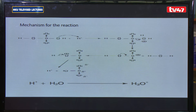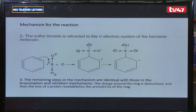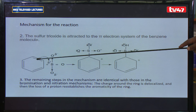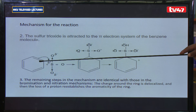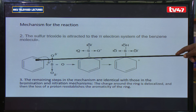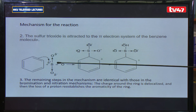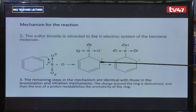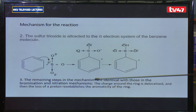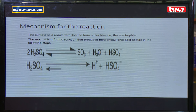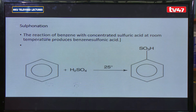The SO3 electrophile adds to the benzene ring in the normal way — attacked by the pi electrons. An intermediate is formed which closes so that you end up with benzene sulfonic acid.